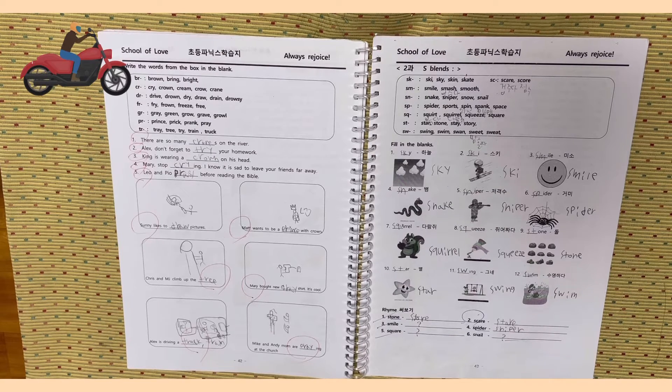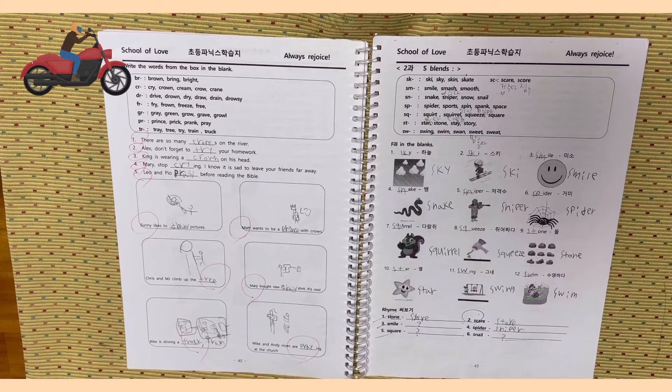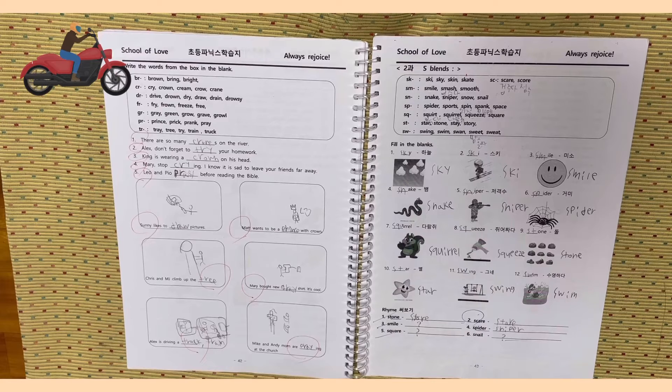Ski, Sky, Skin, Skate, Smile, Smash, Smooth, Snake, Sniper, Snow, Snail, Spider, Sporch, Spin, Spank, Space.